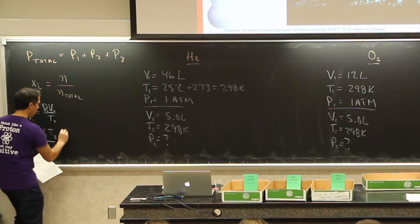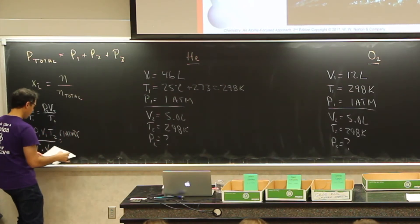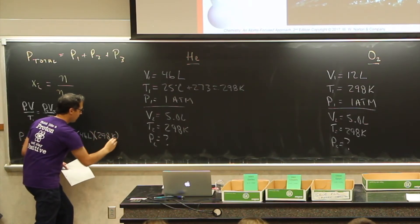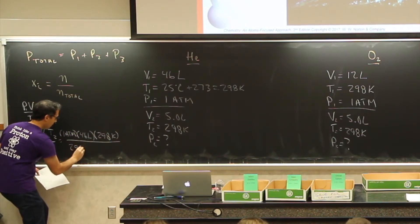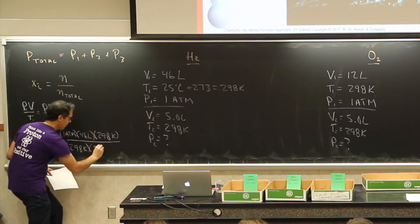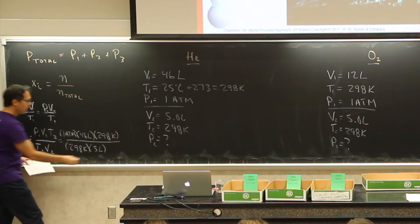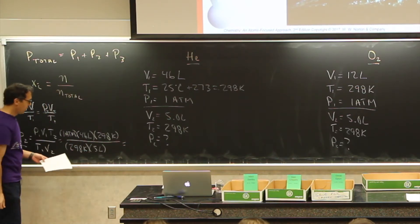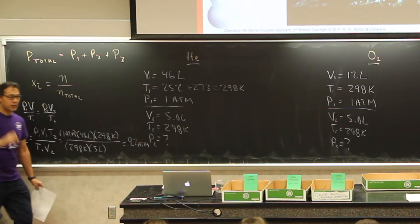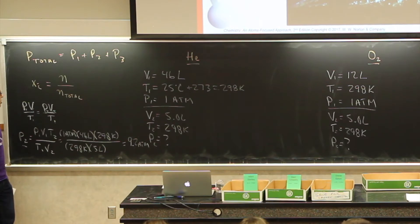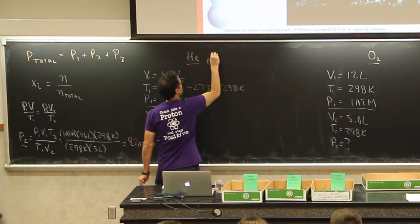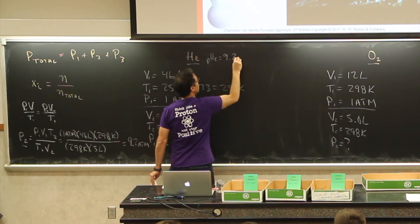I can plug numbers into this and solve for P2. I've got 1 atmosphere and my volume here is 46 liters. Then my temperature is 298 Kelvin. I divide this by my other temperature, 298 Kelvin. Looks like those could have canceled out. Then volume 2 is 5 liters. Once I do the math on that, I get 9.2 atm. That's my partial pressure of helium, so I would say that my partial pressure of helium is equal to 9.2 atm.